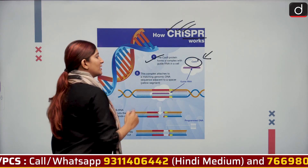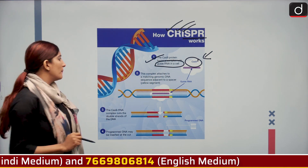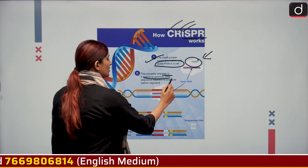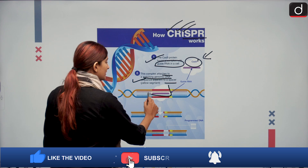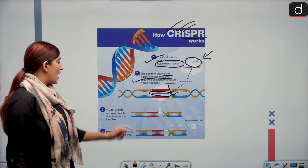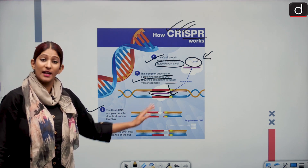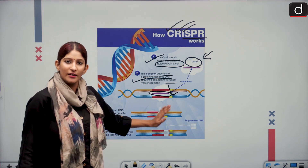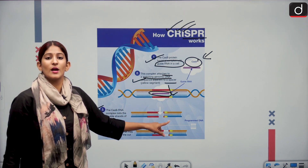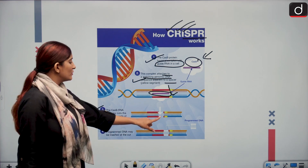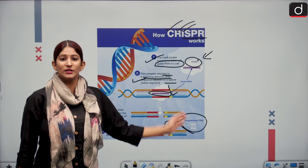The Cas9 protein forms a complex with a guide RNA. This complex attaches itself to a matching genomic DNA sequence adjacent to the spacer. Once attached to the DNA, the Cas9 cuts off a part of the DNA — for example, if the DNA carries hereditary cancer cells — and a programmed DNA strand is then attached in its place. This is how the gene editing tool works.